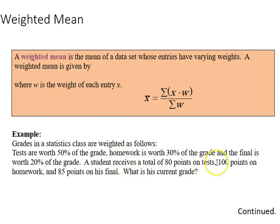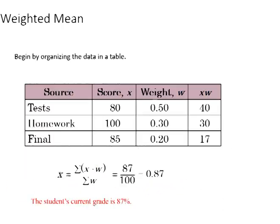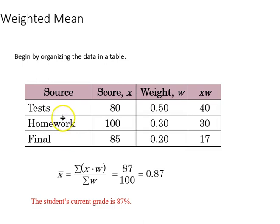A student receives a total of 80 points on a test, 100 points on homework, and 85 points on the final. What is his current grade? We have to come over here and do some calculations, where we just simply weight those scores by the grade weight, and there we have the result. This person has an 87%.